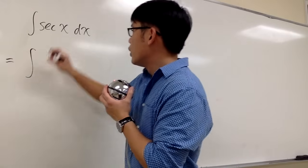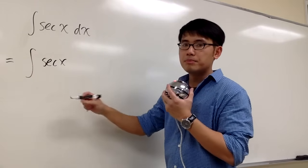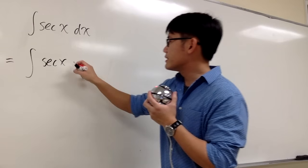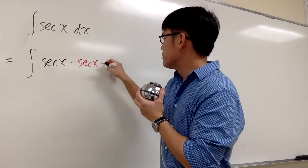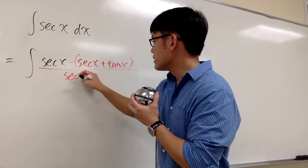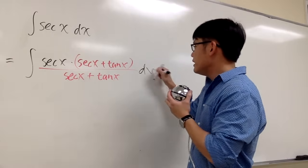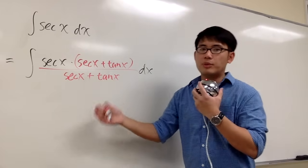So, here's the secret. We are going to look at sec x, and then we are going to multiply the top and bottom by a factor. And that factor is sec x plus tangent x on the top and also on the bottom. And as you can see, they are exactly the same, so I'm not changing anything.